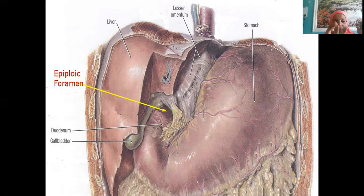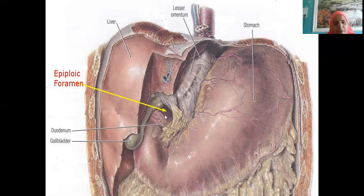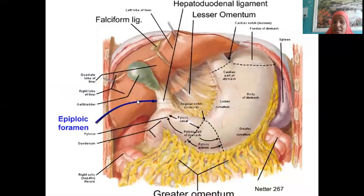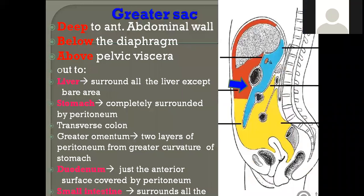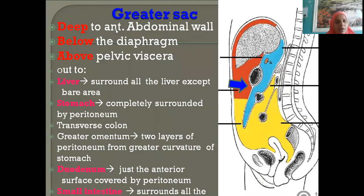The communicating point between greater sac and lesser sac is the epiploic foramen, also called the foramen of Winslow. This is a five-mark question and we need to know the boundaries also. Internal hernias can take place through here — that is the clinical importance of the epiploic foramen, seen on the right free margin of the lesser omentum.